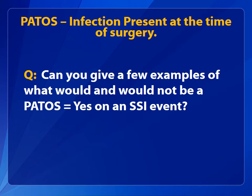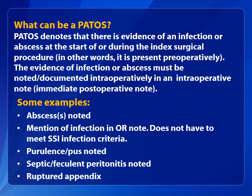We are frequently asked to give examples of what would and would not be a PATOS equals yes on an SSI event. PATOS means that there is evidence of an infection or abscess at the start of or during the index surgical procedure — in other words, it's present pre-operatively. For PATOS, you do not need to meet SSI infection definitions. Some examples of PATOS include abscess, infection noted in the OR note, purulence or pus, septic or feculent peritonitis, or a ruptured appendix.